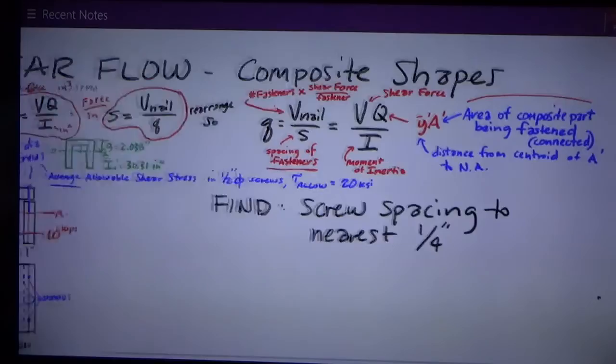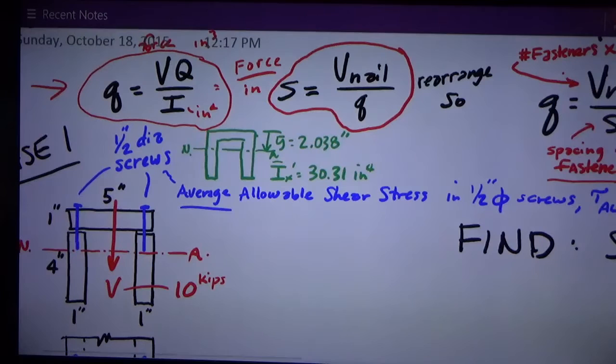So that being given, here's the specific problem that we're going to work on. In earlier videos, I did in green, what's shown here in green, I developed these numbers. I developed y bar is, for the overall shape, the distance from the top to the neutral axis, 2.038 inches. And the moment of inertia about that neutral axis is 30.31 inches to the fourth. See that other video to see how I got those numbers.